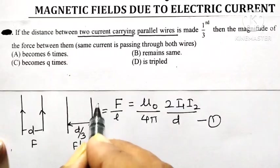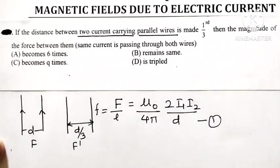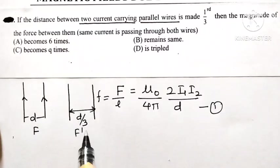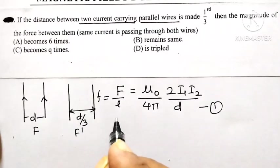Force per unit length we may define, represent it by f. Later on, when the distance of separation between them is reduced to d by 3, so the new force per unit length f dash by l